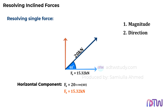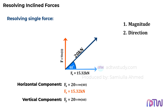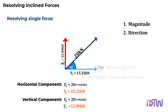Next, to find the vertical component, we multiply the force F with the sine of the angle theta. Therefore, Fy equals 20 multiplied by the sine of 40 degrees, which gives us 12.86 kilonewtons. So we have: horizontal component Fx equal to 15.32 kilonewtons, and vertical component Fy equal to 12.86 kilonewtons.